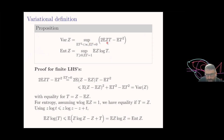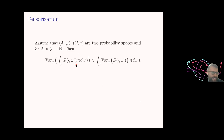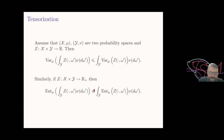Philosophically, the expressions under the suprema are linear in Z and affine in Z respectively, so these are suprema of affine functionals. It turns out that these are convex functions on appropriate subspaces of random variables. This leads us to tensorization properties, which were mentioned in Joe's talk in a slightly different context.